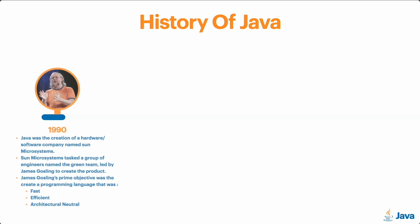Java was created in 1990 by a software hardware company called Sun Microsystems. Sun Microsystems tasked a team of engineers named the Green Team to create a programming language they could use to build their hardware projects. This team was led by a man named James Gosling, a very famous computer scientist. The requirements were that the language had to be fast, efficient — meaning it would not use too much memory — and architectural neutral, meaning it should be able to run on any platform.